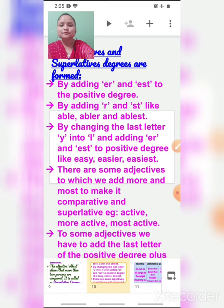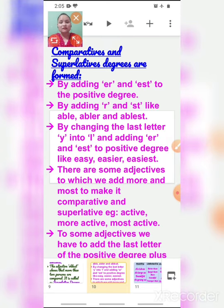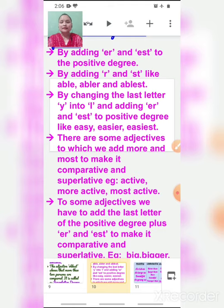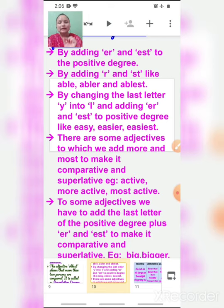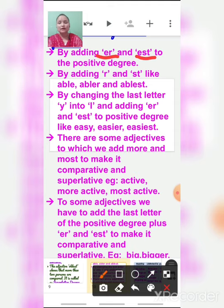So children, these are your three degrees of comparison: positive degree, comparative degree, and superlative degree. Now, comparatives and superlatives are formed by adding ER and EST to the positive degree. By adding ER we make comparative degree, and by adding EST we make superlative degree. Like old, older, oldest. For example, tall — adding ER gives taller (comparative degree), adding EST gives tallest (superlative degree).